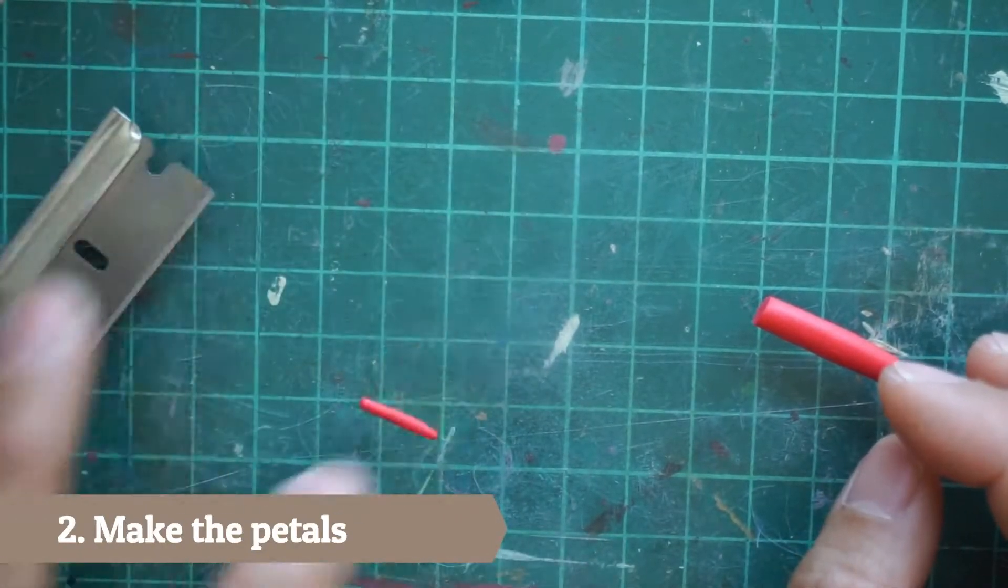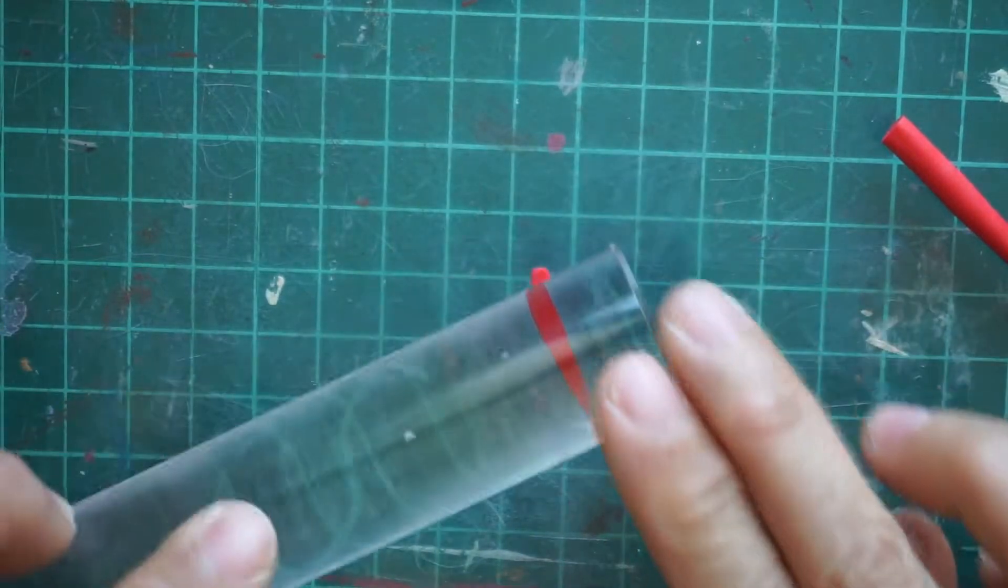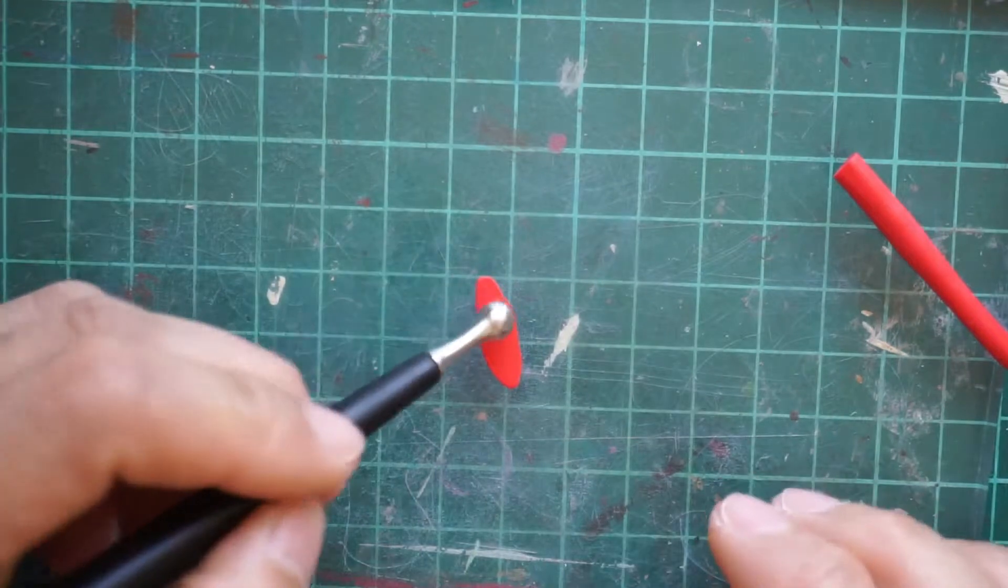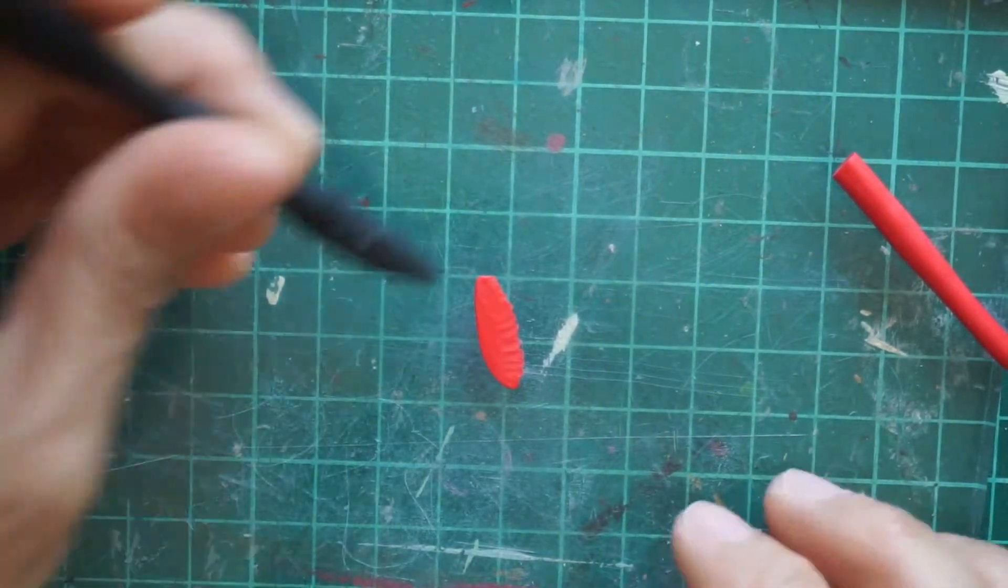For the petals, we will simply roll a snake and flatten and use the stylus ball to make the frills, just like what we did in the first technique. We will use this kind of petal for the whole flower.